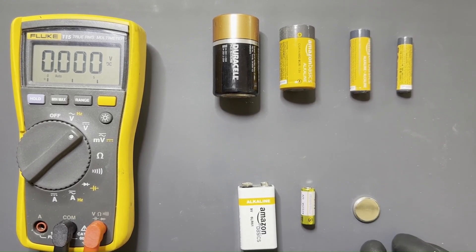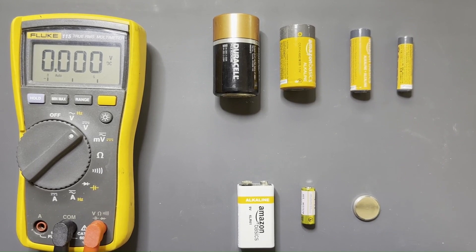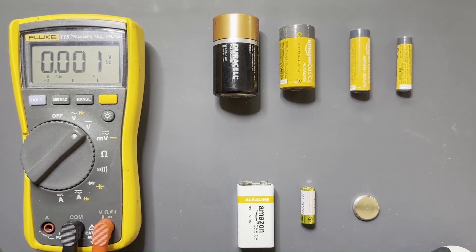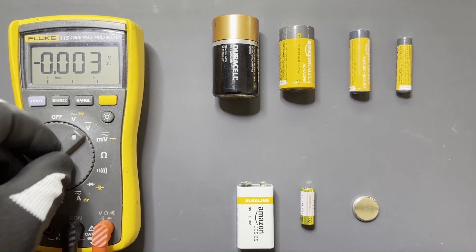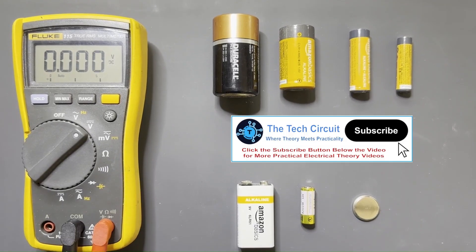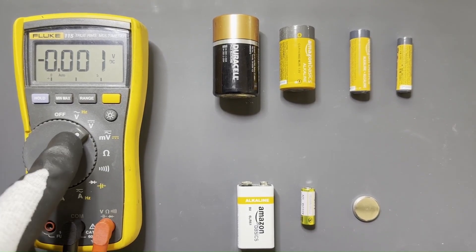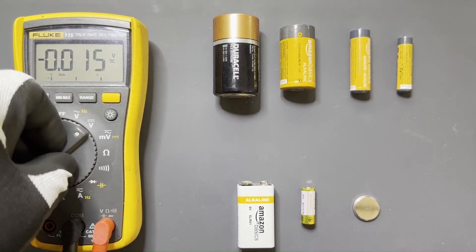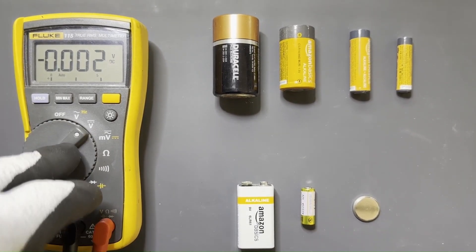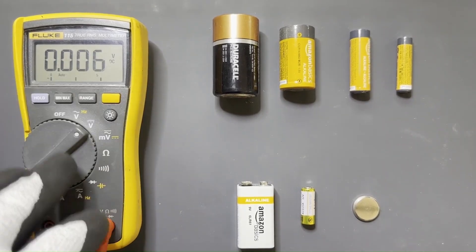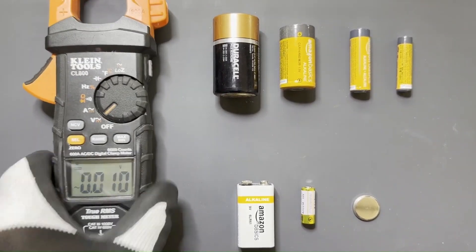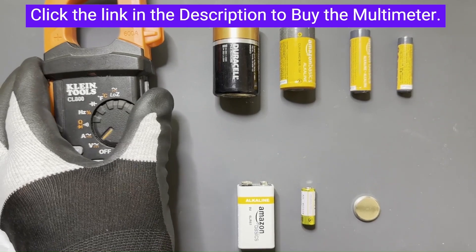We're going to use this meter right here in this demonstration. This is a Fluke meter, this is auto-ranging. You set it on DC voltage here, it automatically sets the range, meaning that if it's a very high voltage it'll automatically detect, if it's low voltage detect that.